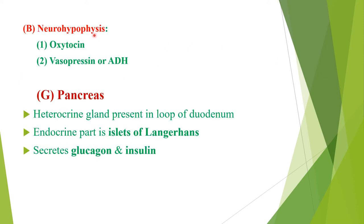The next part of the pituitary gland is the neurohypophysis, which secretes two hormones: oxytocin and vasopressin. Oxytocin helps in the contraction of smooth muscles of the myometrium of the uterus during childbirth and normal delivery, and also helps in the contraction of smooth muscles surrounding the alveoli of the mammary glands during sucking of nipples by the infant, helping in milk release. Next is vasopressin, also called ADH (anti-diuretic hormone), which helps in contraction of smooth muscles of arterioles, controls blood pressure, and helps in osmoregulation — that is, water balancing of body fluids.